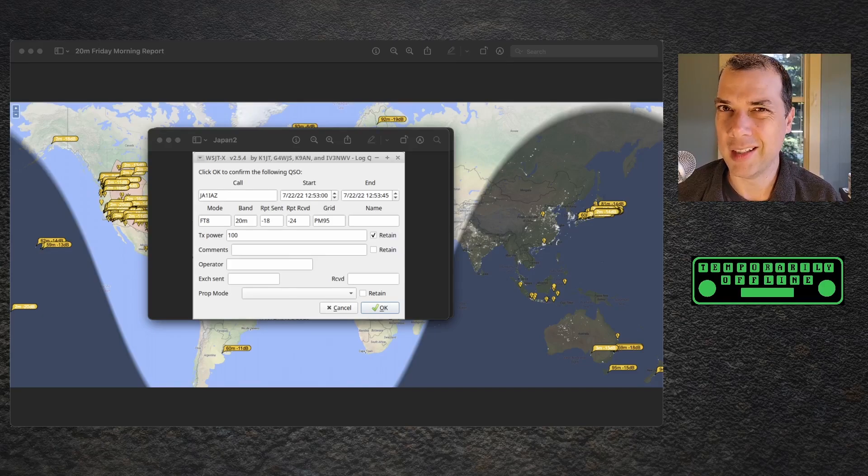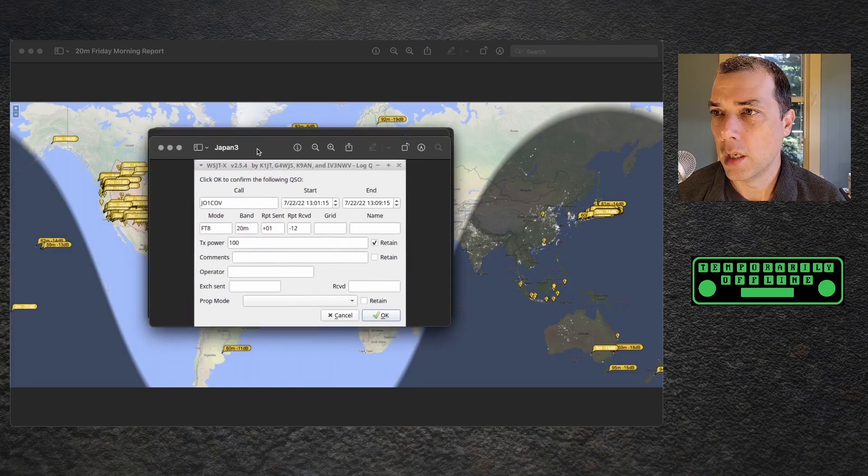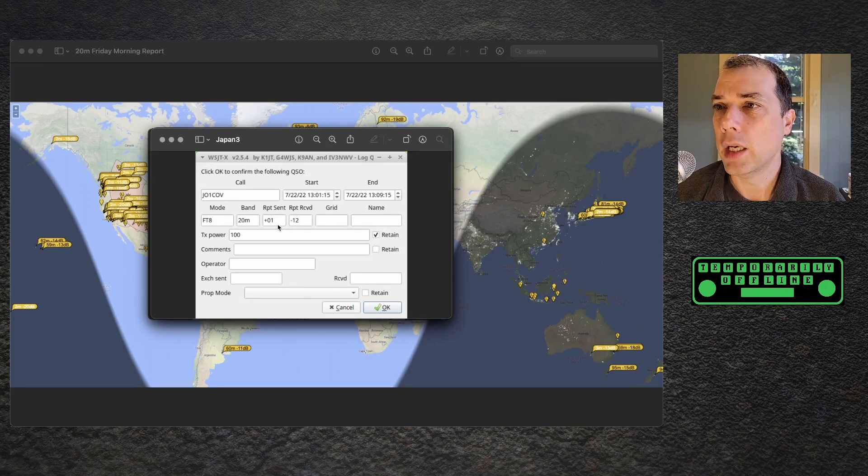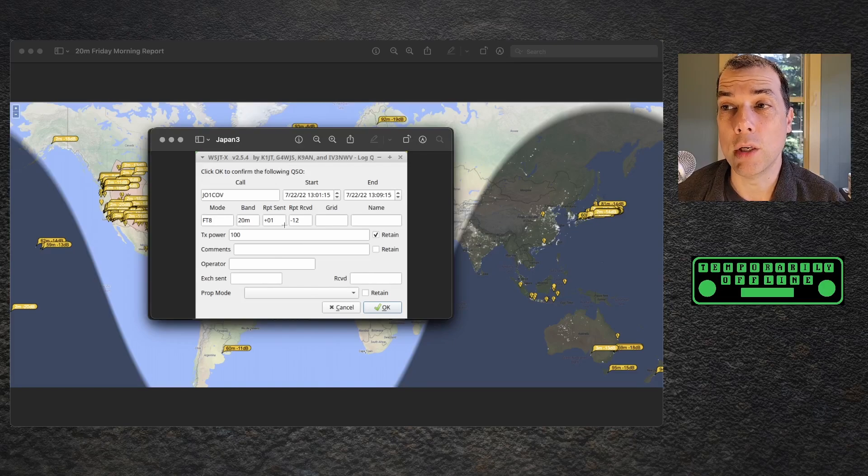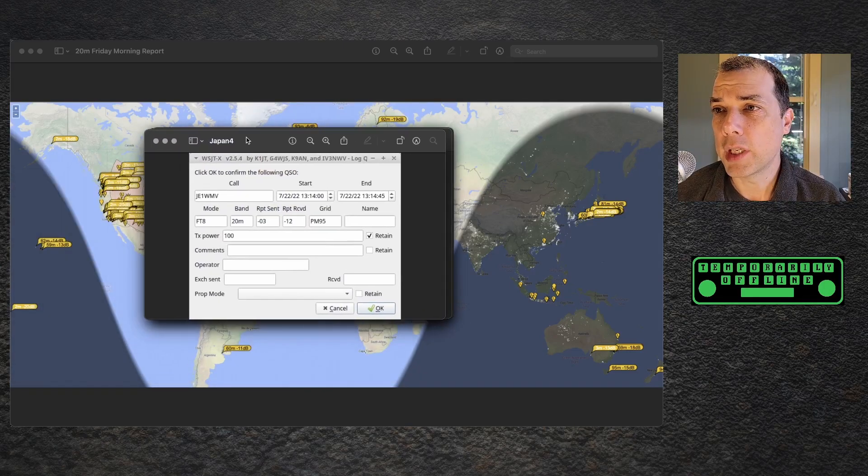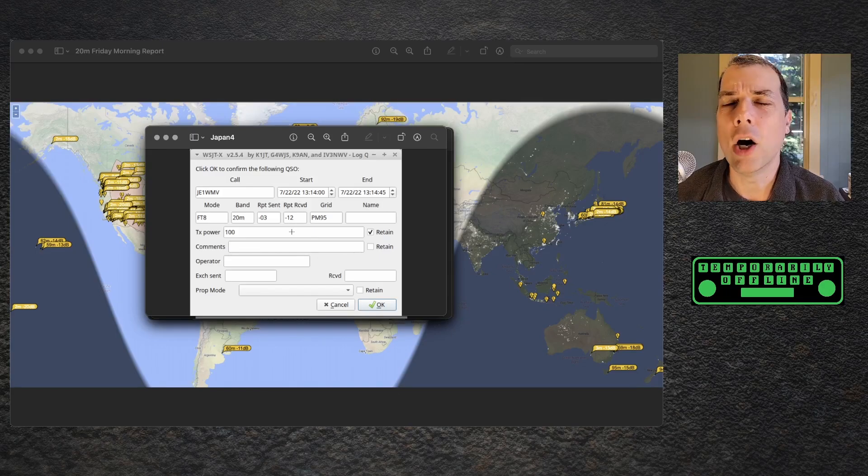My station configuration wasn't the best that it could have been. I don't have this kind of coax. I had to put a bunch of different kinds of coax together to get this thing up. So I'm already fighting that. So, again, that's how awesome this is. This guy had a fantastic station, JO1COV. And I sent him a plus 01. And I received back a minus 12. Those are both fantastic numbers for all the way across the globe. And Japan was just rolling in. So I got a fourth contact in, JE1WMV. I sent a minus 3. I received a minus 12. Awesome antenna. This thing did an amazing job.